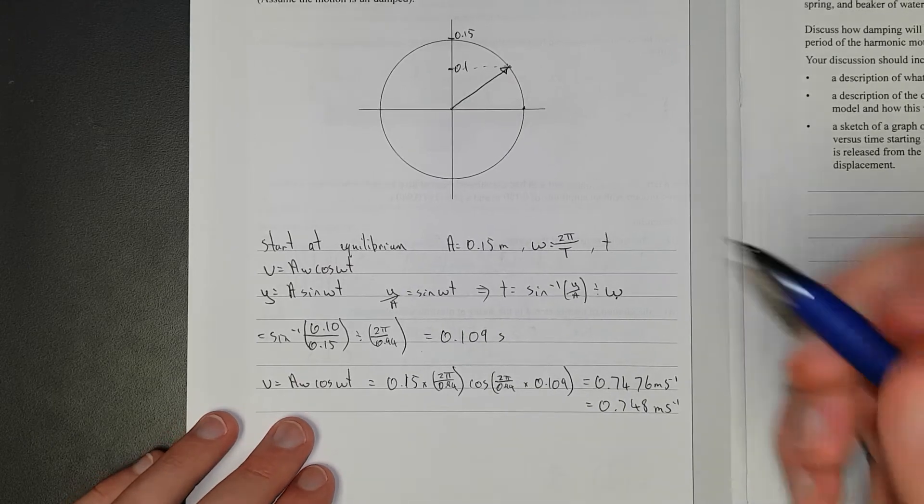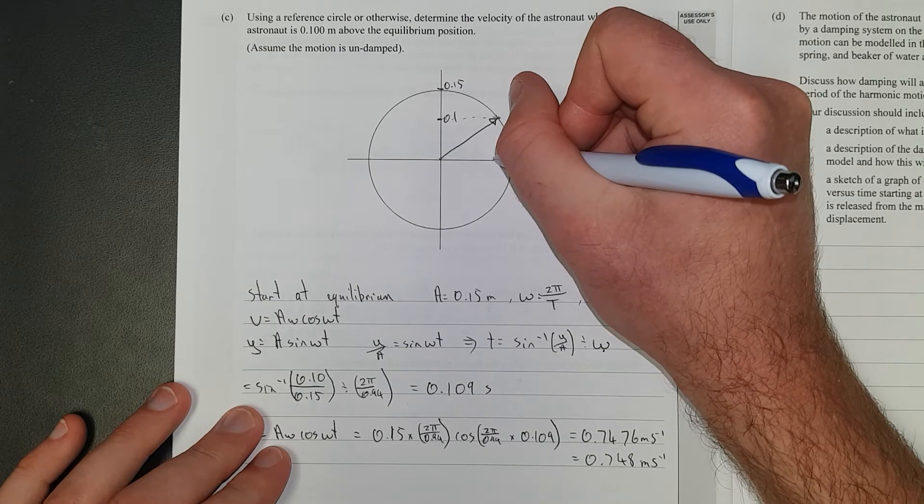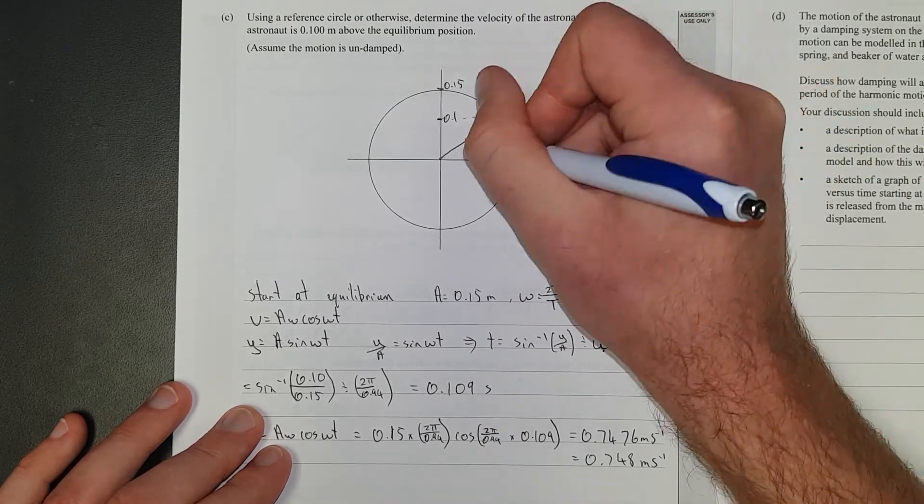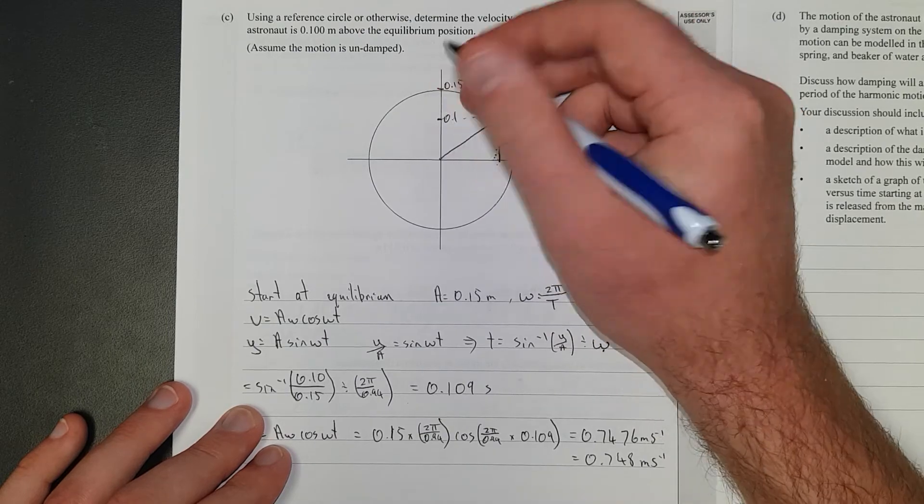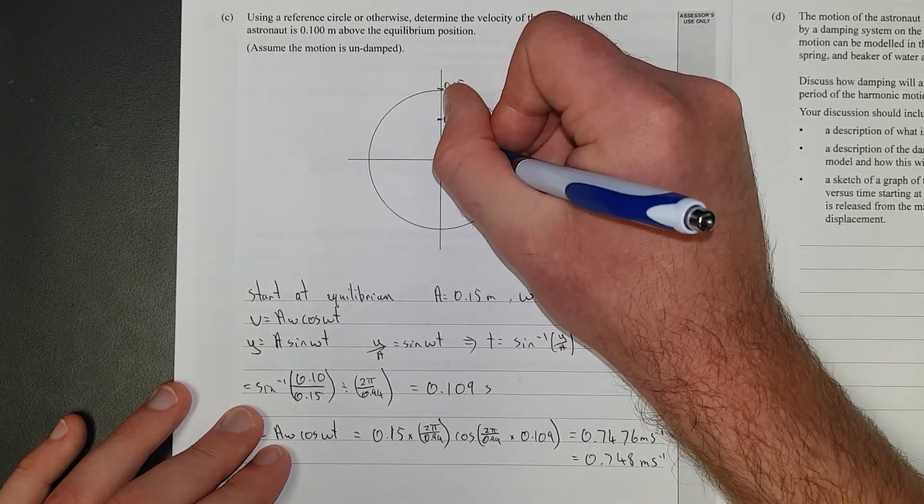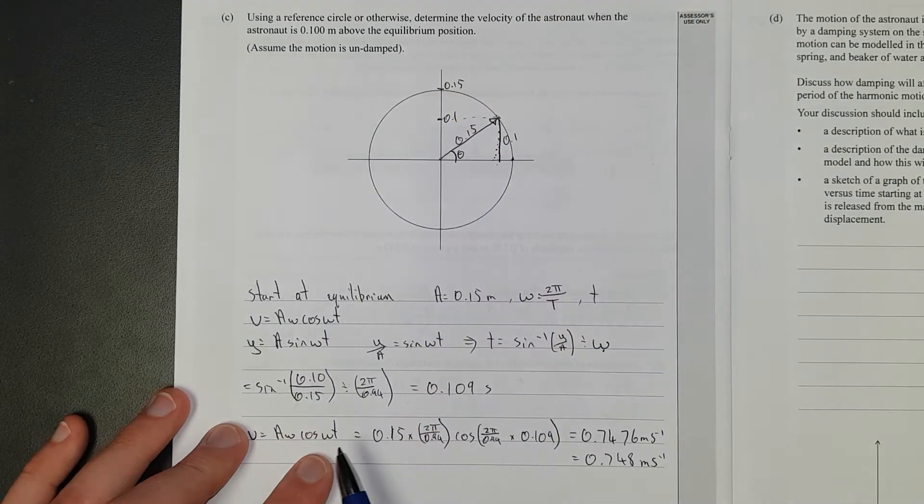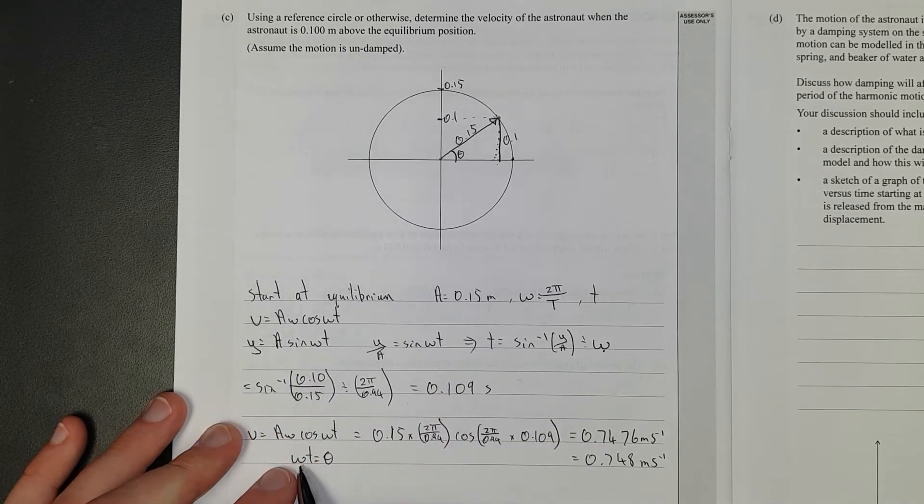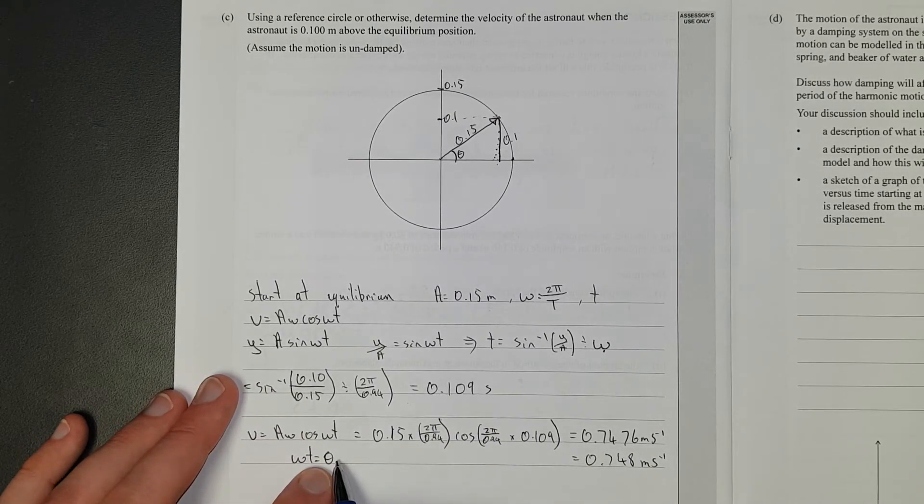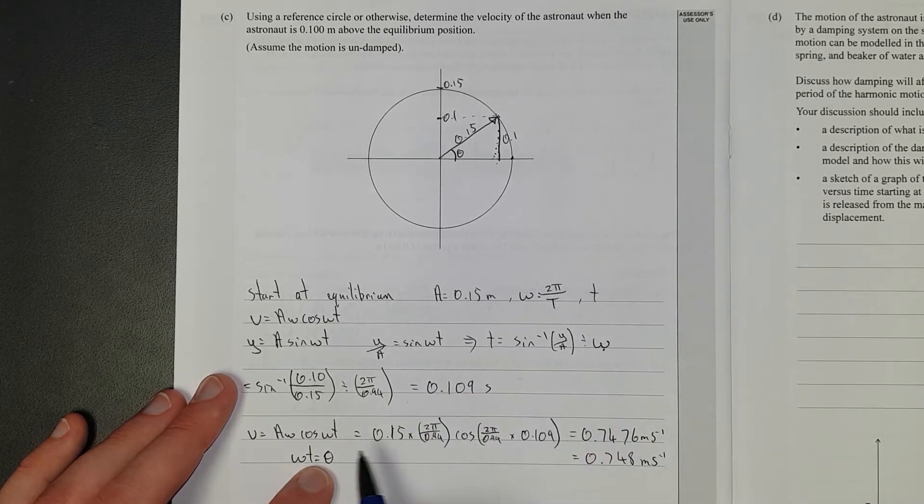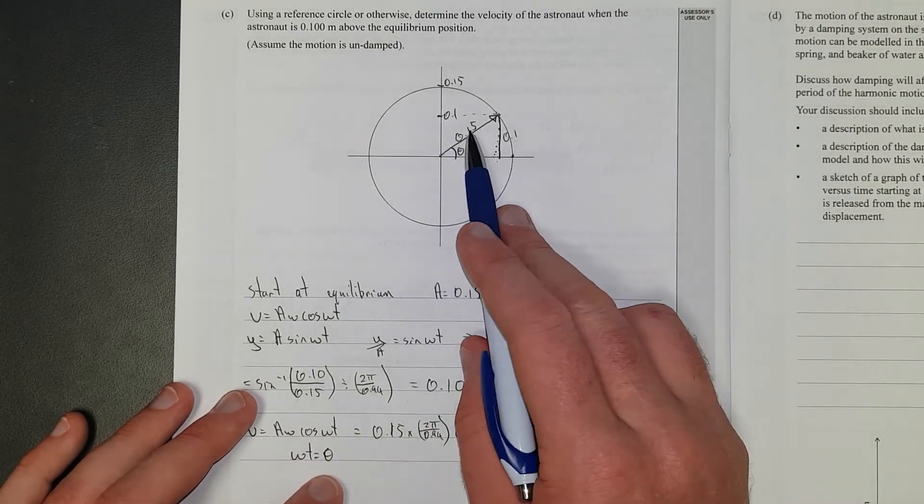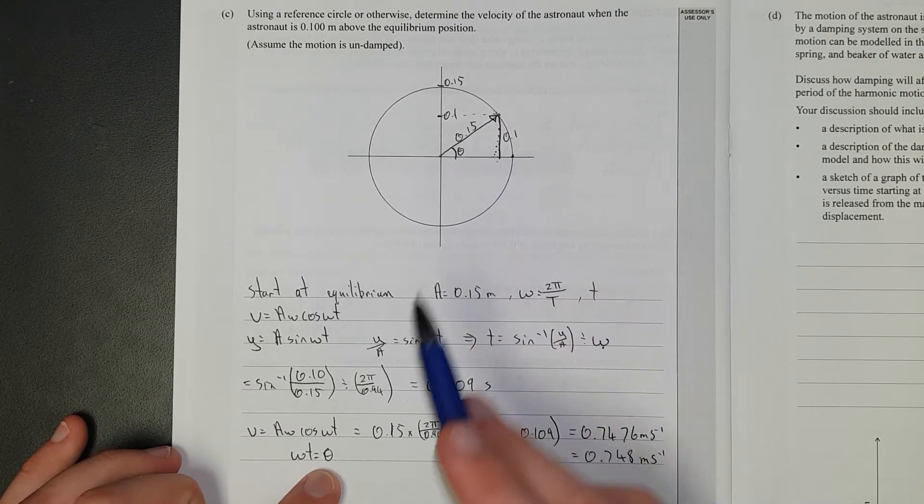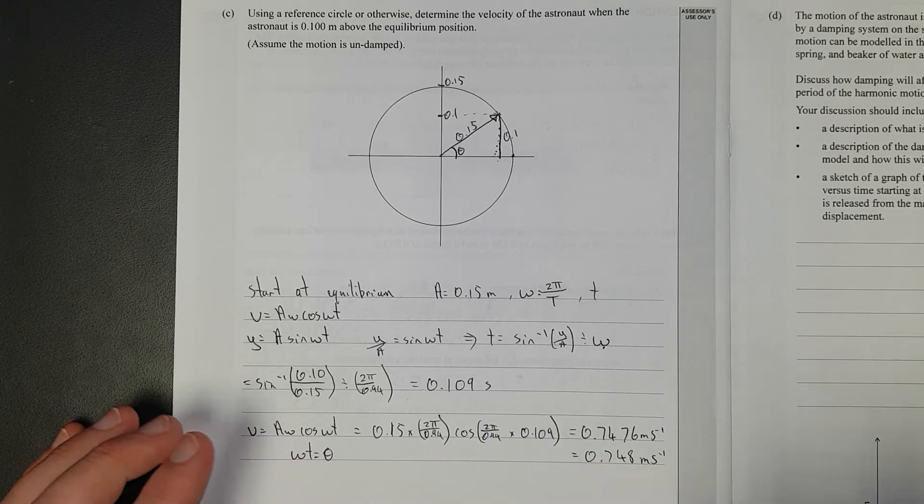Another way to do it: you have this height on your phasor diagram. This distance is 0.1, this distance is the radius which is 0.15. You can find this angle theta and just plug that in. Because omega t is just equal to theta, angular distance times time gives you angular displacement. You'd use a bit of trig, sine theta equals the opposite divided by the hypotenuse. That would skip the step of finding time.